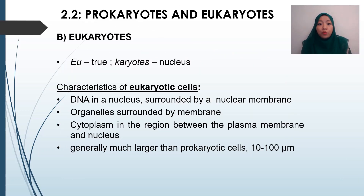Next, we move on to eukaryotes. The word 'eu' means true, and 'karyotes' means nucleus, so eukaryotes are organisms that have a true nucleus. DNA can be found in the nucleus and is surrounded by the nuclear membrane. The organelles are also surrounded by membranes. The cytoplasm is the region between the plasma membrane and the nucleus, and eukaryotes are generally much larger than prokaryotes, around 10 to 100 micrometers.